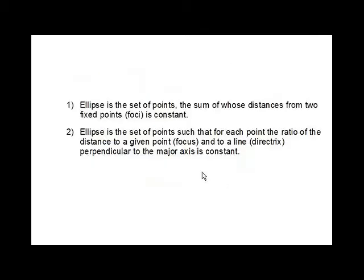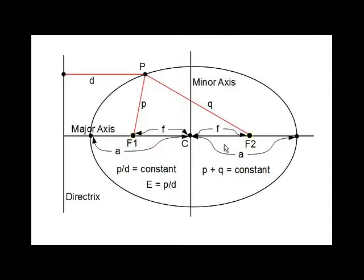The second definition is the set of points such that for each point, the ratio of distance to a given point F1 and to a line, the directrix perpendicular to the major axis, is constant. Referring to the same diagram, we add the horizontal line of length D from P to the directrix. This definition says simply that the ratio of P over D is the same for all P.